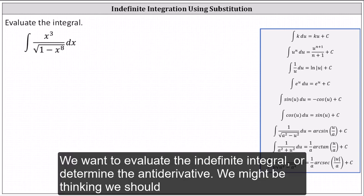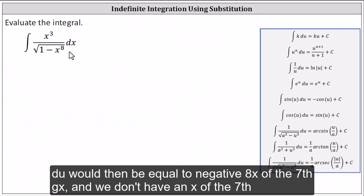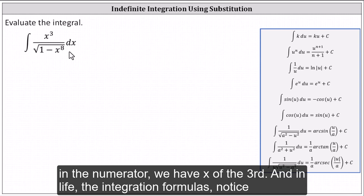We want to evaluate the indefinite integral or determine the antiderivative. We might be thinking we should let u equal the radicand of one minus x to the eighth, but this won't work because du would then be equal to negative eight x to the seventh dx, and we don't have an x to the seventh in the numerator, we have x to the third.